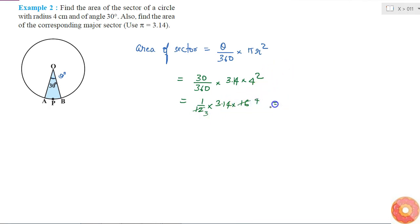So 4 into 4. I can write it as 3.14 into 4 which is 12.56 divided by 3.